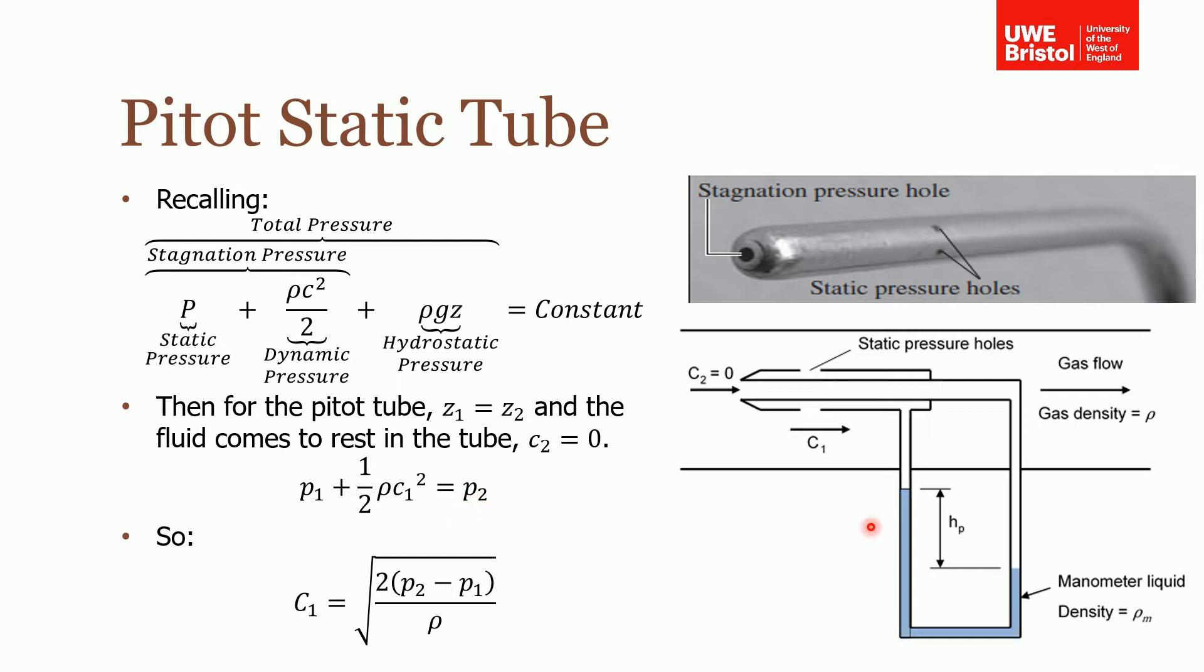What we're saying is if we look at this pressure differential here - p2 minus p1 - that is equal to the dynamic pressure at one, which is a function of velocity. So we can use this device to measure the velocity in the flow by knowing what the pressure differential is. You can see here we've rearranged it to make c1 the subject, so it's equal to that pressure differential divided by density times two. And of course that pressure differential is a function of the manometer liquid, so it'd be ρm g times hp, and that'd be the pressure difference here.